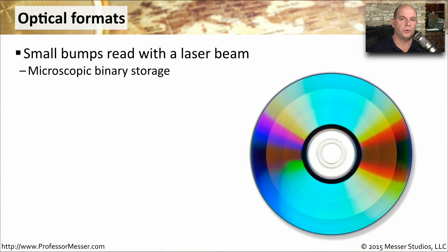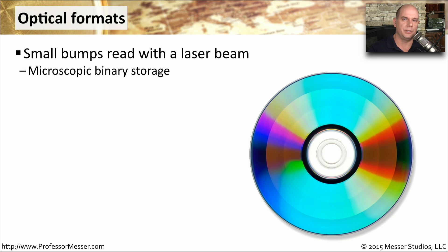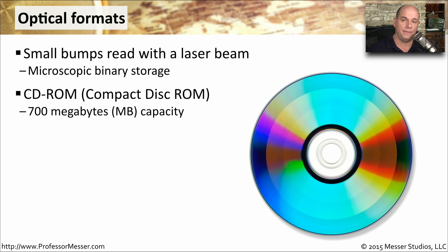One common storage type that you'll find is optical storage. There are so many different kinds of optical formats for saving information, but they all work basically the same. There are very tiny bumps on these optical devices, and we read these bumps using a laser beam. This is a very microscopic way of storing information, but we're able to store a great deal on a very small area.